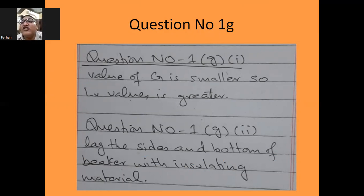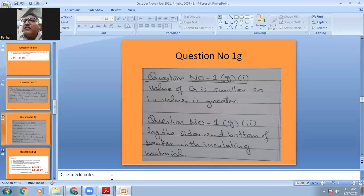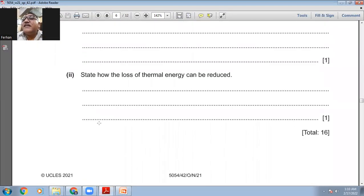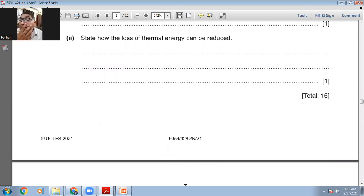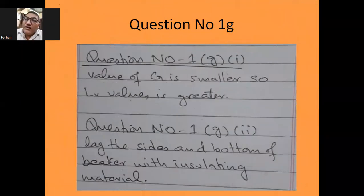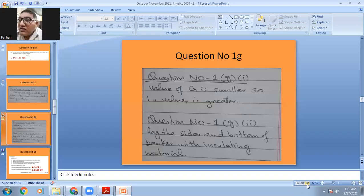The value of G is smaller, so the LV value is greater. Then: state how the loss of thermal energy can be reduced. You can do lagging by wrapping insulating material around and under the beaker. Lag the sides and bottom of the beaker with insulating material. That was question number one, part G.